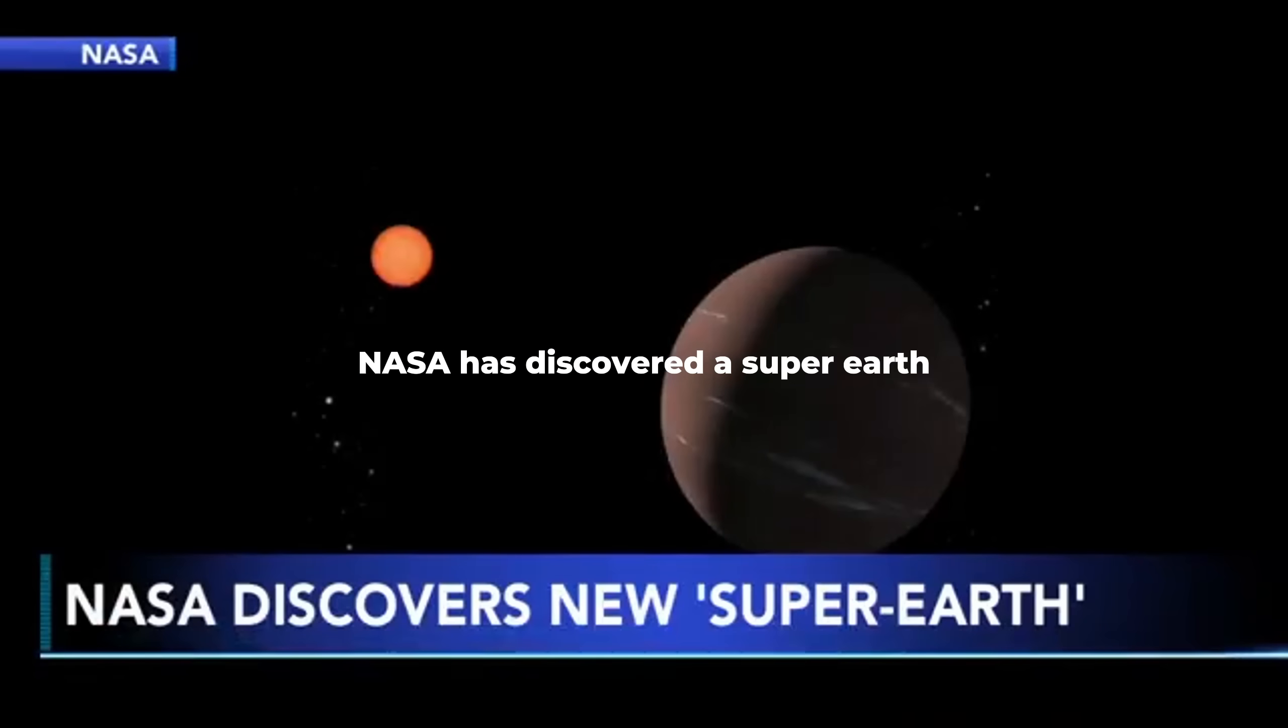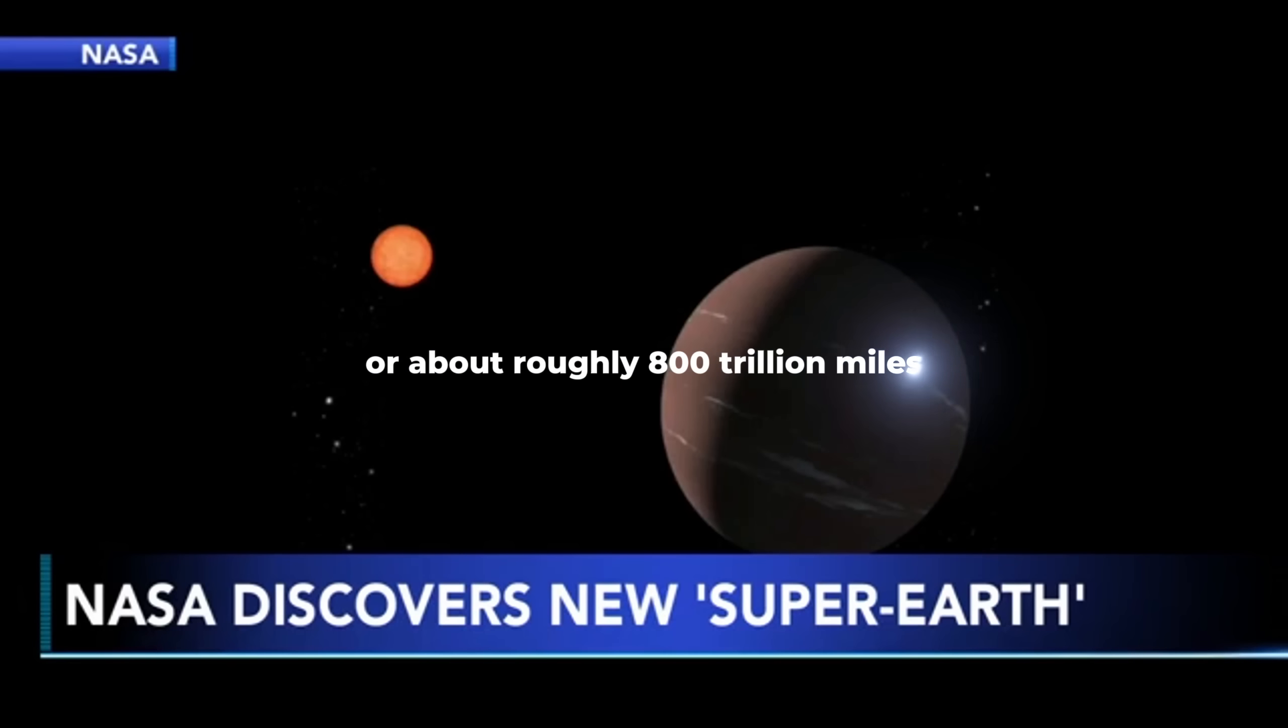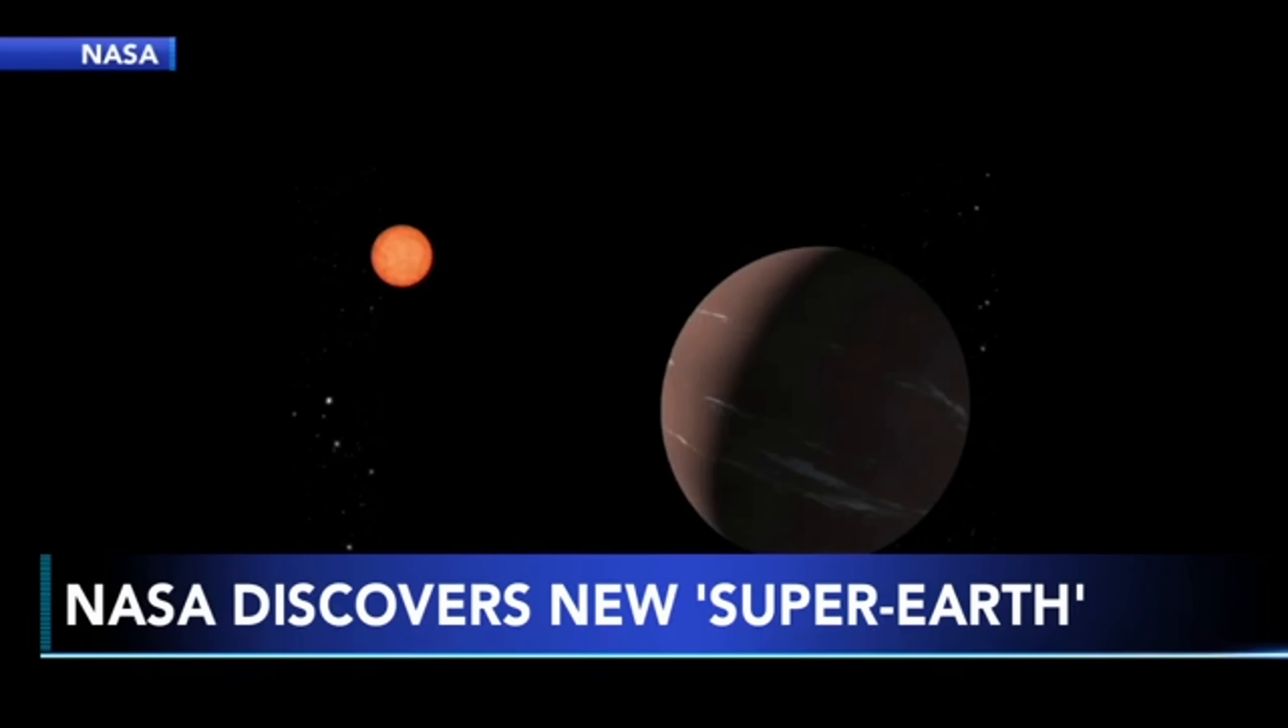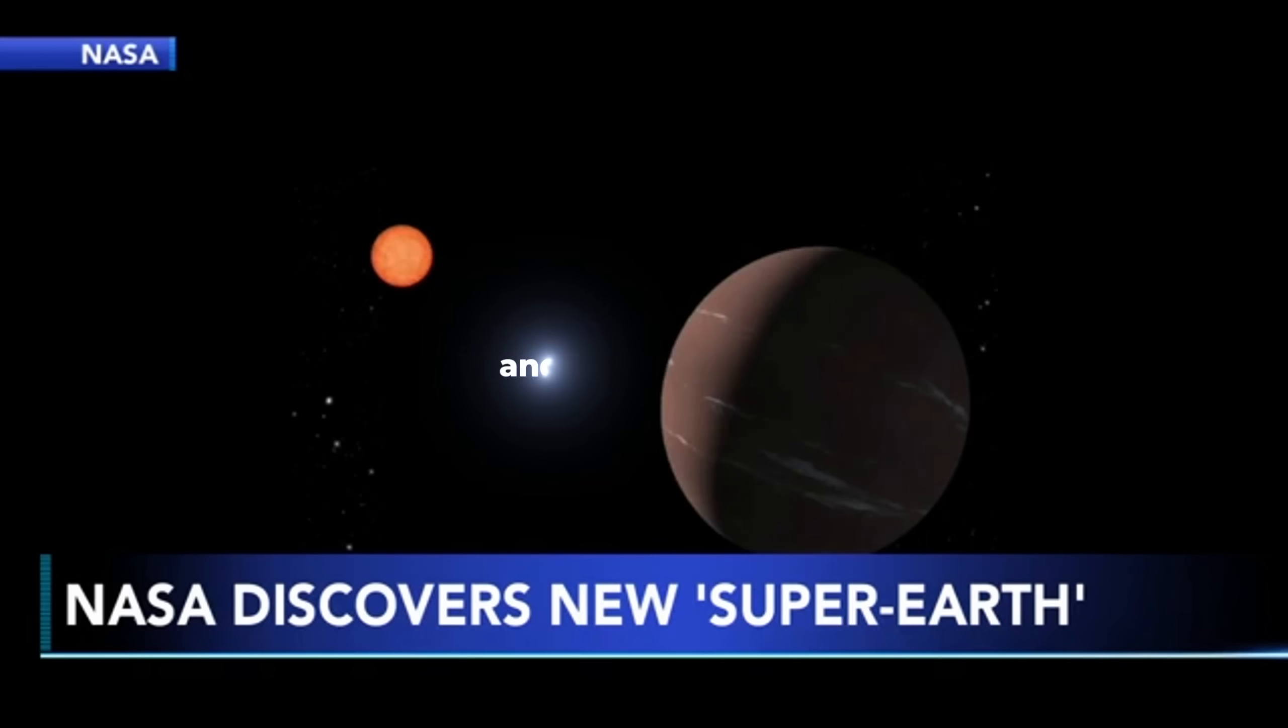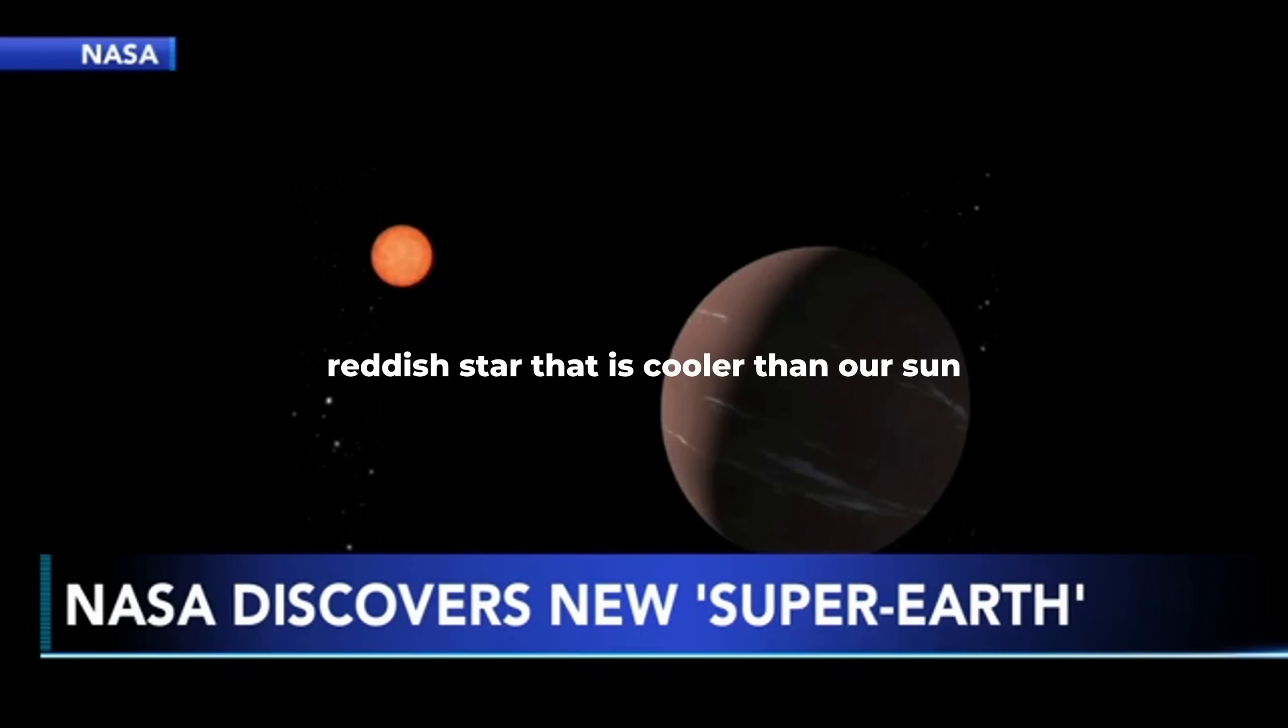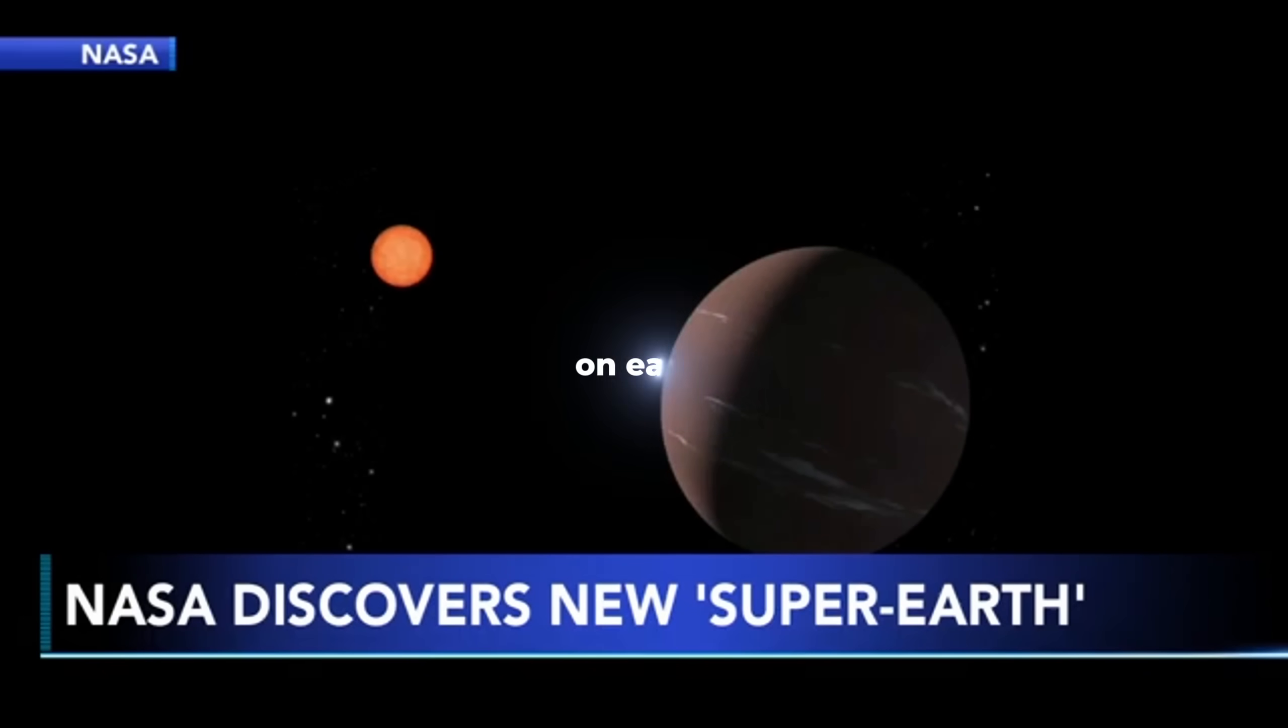NASA has discovered a super-Earth that could have conditions to sustain life. The new exoplanet is 137 light-years away, or about roughly 800 trillion miles. Astronomers say the planet is about one and a half times the size of Earth and orbits a small, reddish star that is cooler than our sun. NASA says because the super-Earth orbits such a short distance from that star, a year for that planet is equal to just 19 days on Earth.